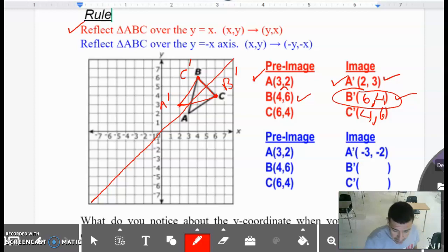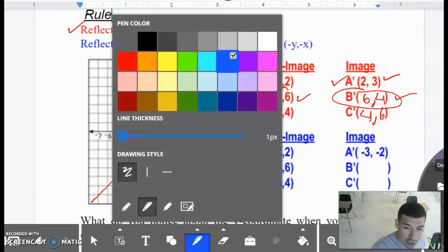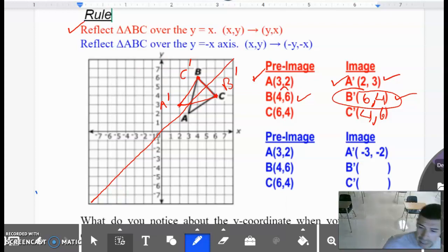The second type of reflection is over the y equals negative x axis. And this one is almost the same. You flip them, but not only you flip, you also change the sign. So for example, A was three comma two. New A is negative three comma negative two. Notice that you flip them, but you also change the sign.